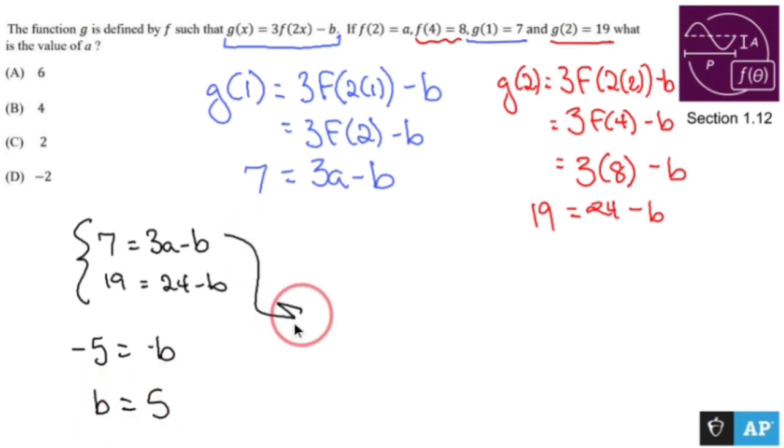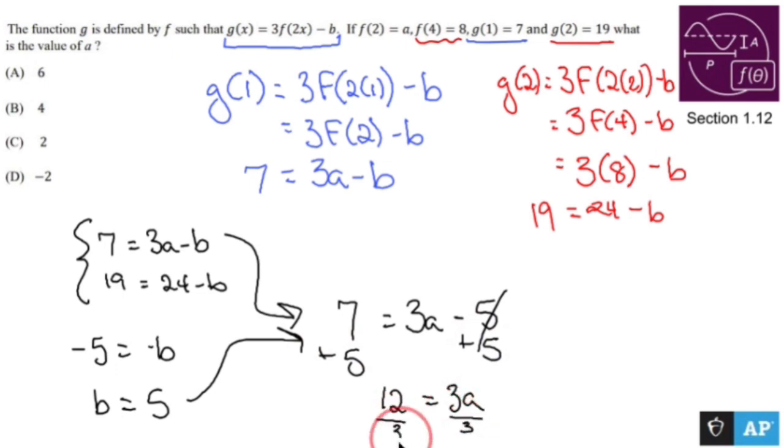I could take that guy right there in the top equation and replace b with 5. 7 equals 3a minus 5 has me adding 5 to both sides to get 12 equals 3a. Divide both sides by 3, and after all of that, a is 4.